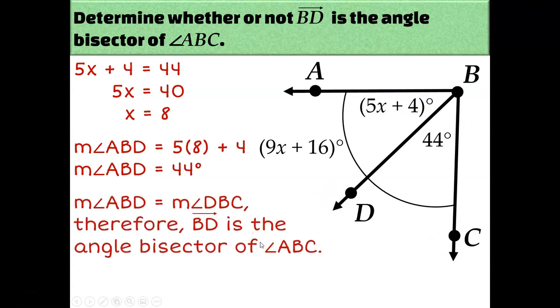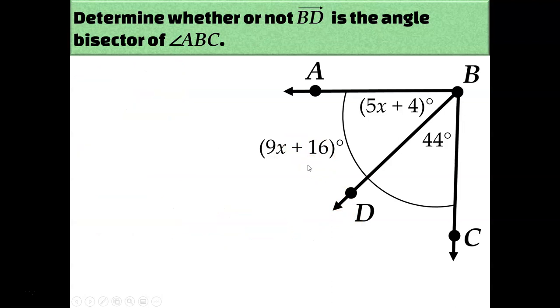So angle ABD is 44, and angle DBC is 44. So that allows me to conclude that BD must be the angle bisector of angle ABC. That's one way to prove that BD is the angle bisector of angle ABC. You might have thought of doing it a different way, because you might have noticed we didn't use this 9x plus 16 at all. And you didn't have to, but you could if you wanted to do it in a different way.